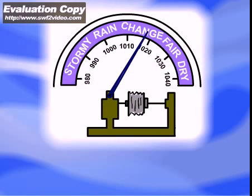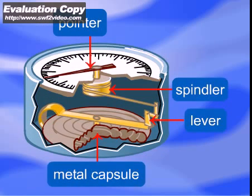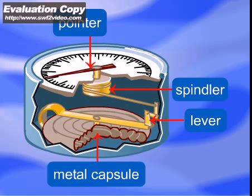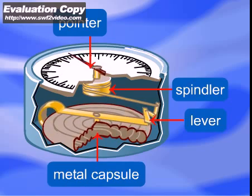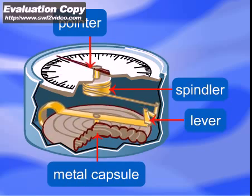Manometers for measuring atmospheric pressure called barometers do not contain a liquid. Inside a barometer, there is a small evacuated metal capsule. Changes of atmospheric pressure make the capsule expand or contract. These tiny movements are transformed by springs and levers to the indicating arm, which points to the actual value of the atmospheric pressure.